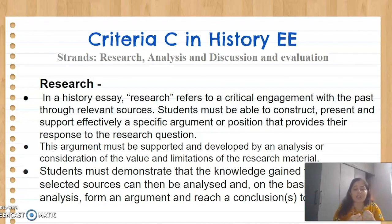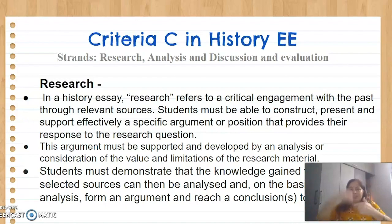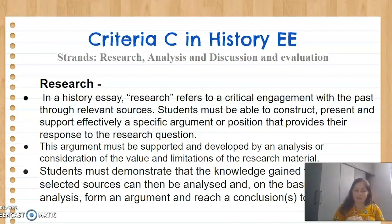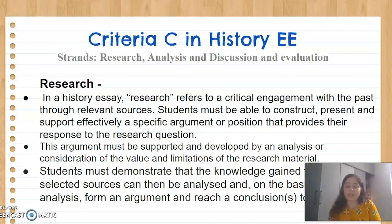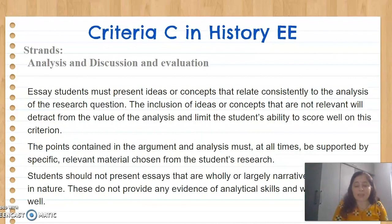Students should demonstrate knowledge gained from selected sources, analyze that knowledge, form an argument, and reach a conclusion. The sequence goes: you have a research question, you look into different types of sources considering their value and limitations, put them into an argument through analysis, and that argument leads to a conclusion which supports the research question. That is how the whole process of Criteria C looks initially.